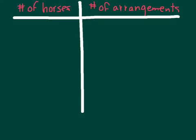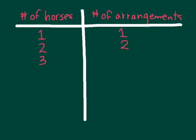Another strategy is to make a table and look for patterns. Let's start filling out the table. With one horse, there is one possible arrangement. Now let's look at three horses: with three different horses and three stalls, there are six possible arrangements.